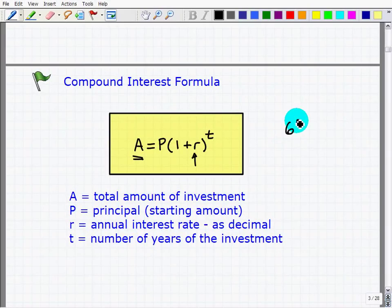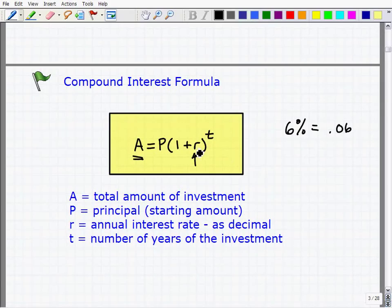And this r, the annual interest rate has to be expressed as a decimal. So for example, 6% as a decimal is 0.06. So here in this particular example, you'll see it would be 1 plus r or 1 plus your 6%, but we don't write this as a percentage. We write it as a decimal, so it's going to be 1 plus 0.06. We're going to do an example in just a second.